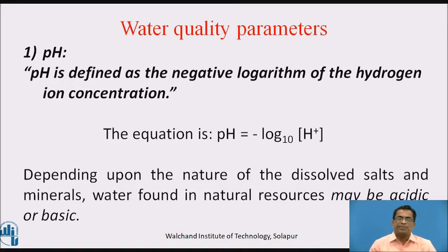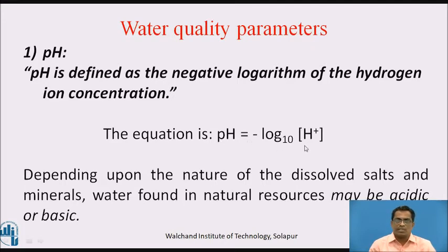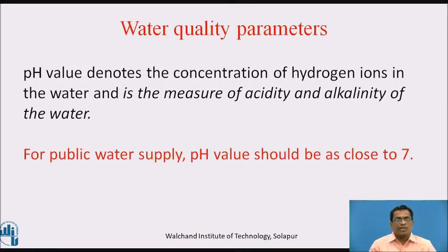First parameter: pH. pH is defined as the negative logarithm of the hydrogen ion concentration. The equation to represent pH is: pH = −log₁₀[H⁺]. Depending upon the nature of the dissolved salts and minerals, water found in nature may be acidic or basic. pH value denotes the concentration of hydrogen ions in the water and is the measure of acidity and alkalinity. For public water supply, pH value should be as close to 7.